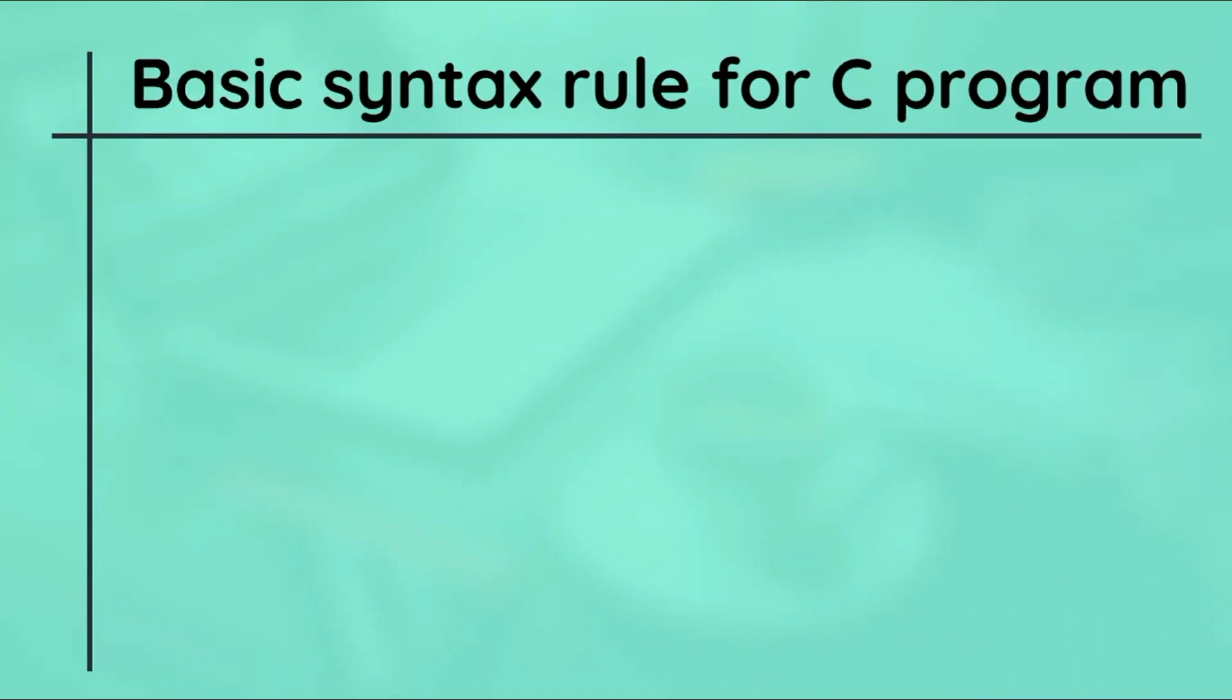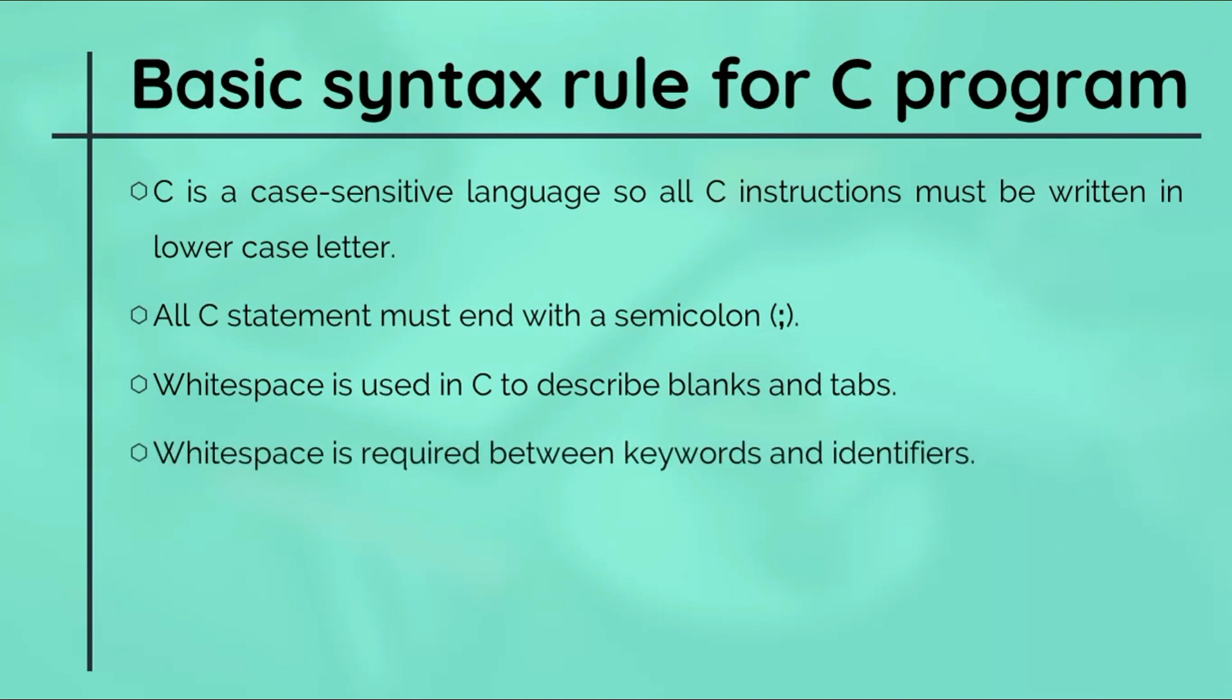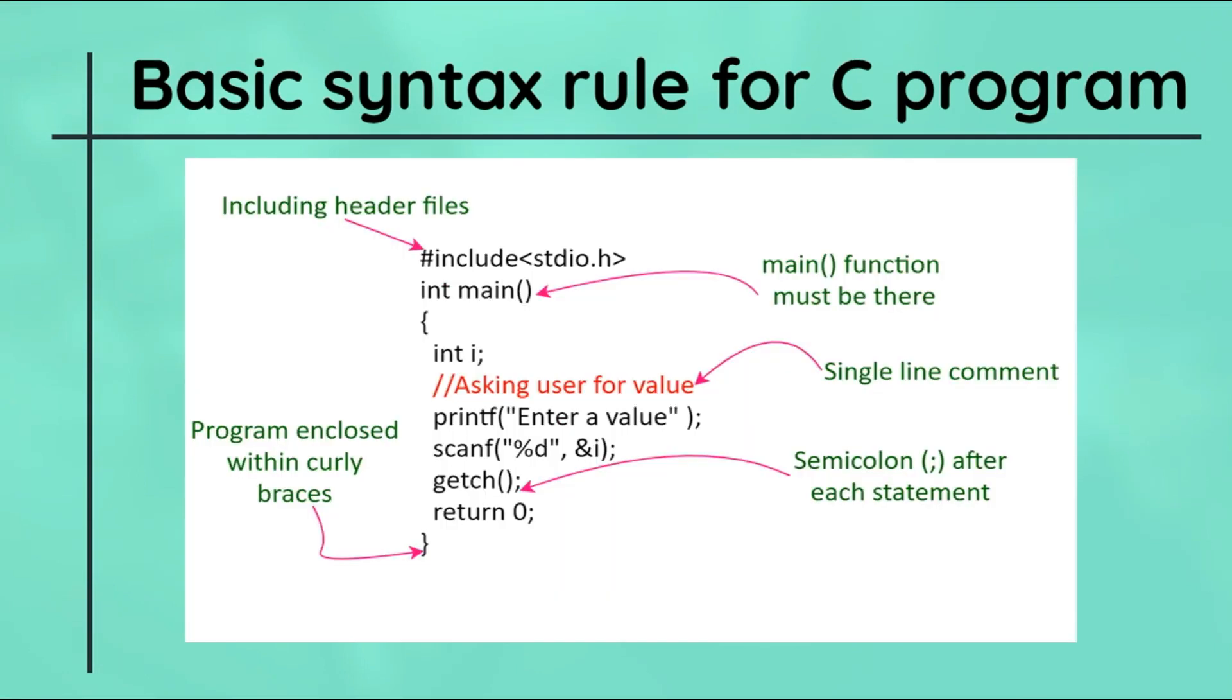Now let's have a look at some of the most common syntax rules that you need to keep in mind and follow when you write a C program. C is a case-sensitive language, so all C instructions must be written in lowercase. All C statements must end with a semicolon. White space is used in C to describe a blank and tabs. White space is required between keywords and identifiers. We will learn about keywords and identifiers soon. And at last, C programs should be saved with the dot C extension. For example, firstproc.c or you can write any program name but the extension should be dot C only. This figure describes all the rules that we have listed in our previous slide.